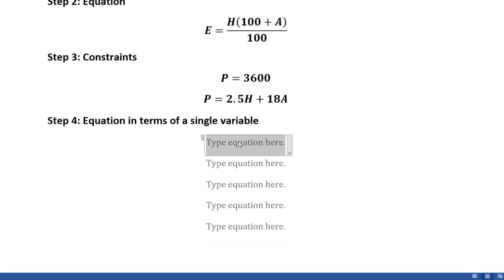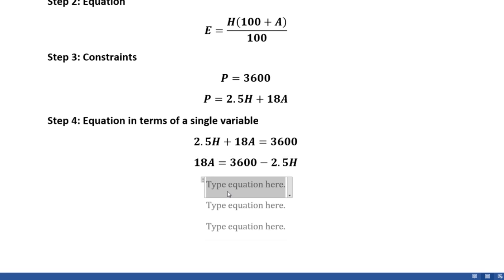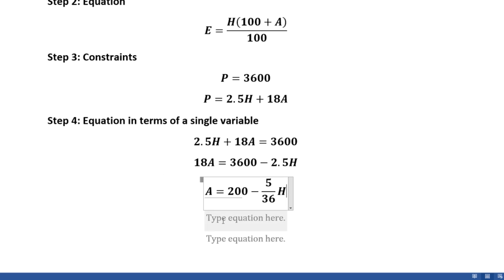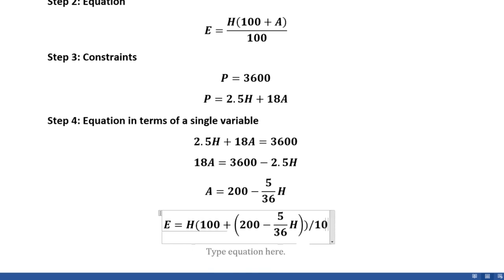Now that we have both our equation for E and our constraints, we can start to solve for an equation in terms of a single variable. We set 2.5h + 18a = 3600, then solve for a in terms of h: 18a = 3600 − 2.5h, so a = 200 − (5/36)h. Now we plug this into our original equation: E = h·(100 + 200 − (5/36)h)/100.